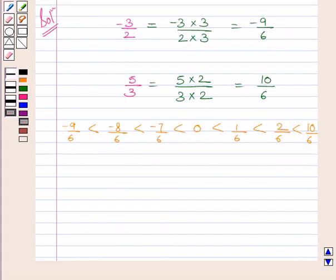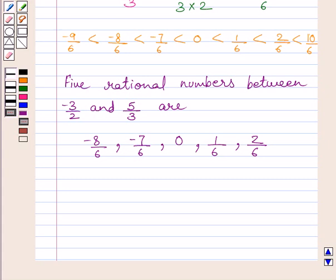Note that there can be many more such rational numbers. So our required answer is 5 rational numbers between minus 3 upon 2 and 5 upon 3 are minus 8 upon 6, minus 7 upon 6, 0, 1 upon 6 and 2 upon 6.